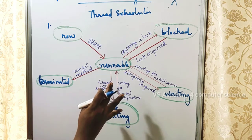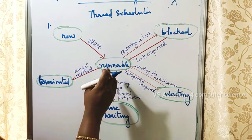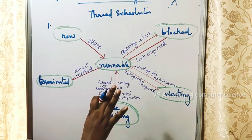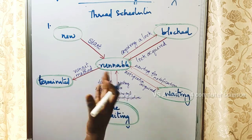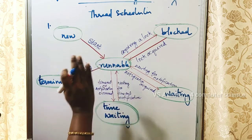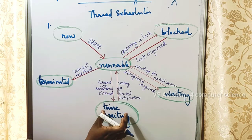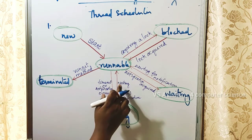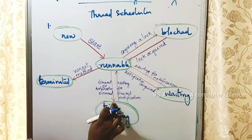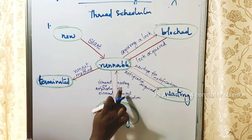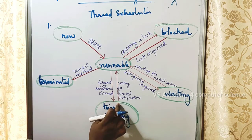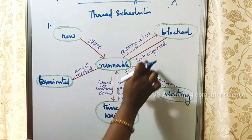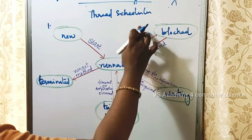When compared to the waiting state, in the timed-waiting state there is a particular timeout. The thread will wait for that timeout period and then become runnable again. The main difference between timed-waiting and waiting is that timed-waiting has a specific timeout after which the thread becomes runnable.